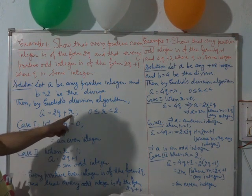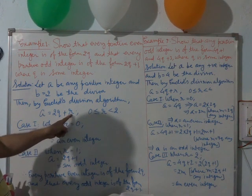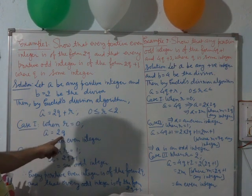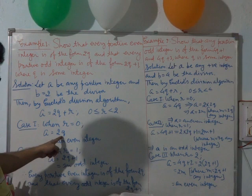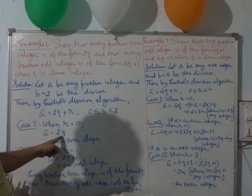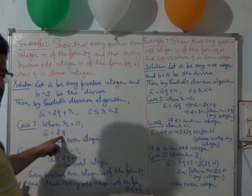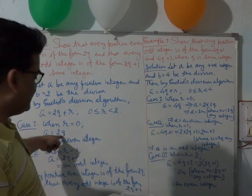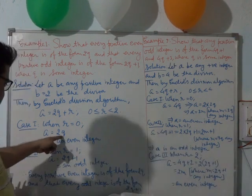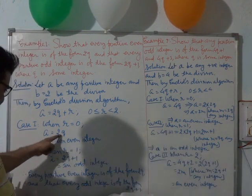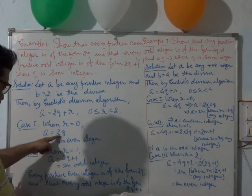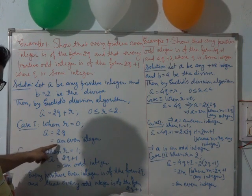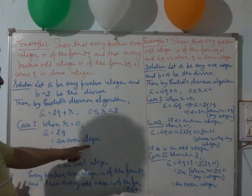In case 1, when remainder R is equal to 0, placing 0 here we get A equal to 2q. We know that any number which is a multiple of 2 is an even integer, so A will be an even integer.